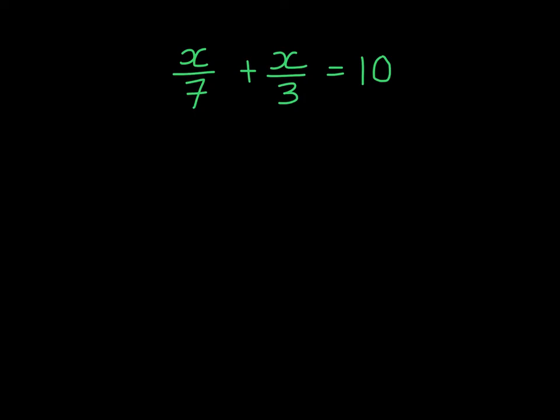In this equation, we have two different denominators. If we were to multiply the whole equation by 7, we would find we still are left with a denominator of 3. And if we multiply the whole equation by 3, we would still be left with a denominator of 7. If you want to see this yourself, pause the video and try it. So to avoid this, we're going to multiply by a number that both 7 and 3 fit into.